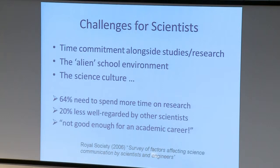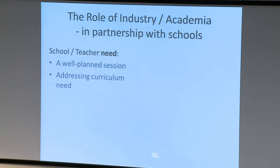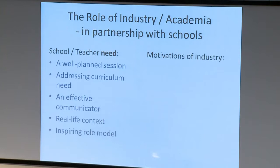Really worrying, 20% felt less well regarded by their peers and by other scientists because they took part in outreach and engagement activities. And one even said that they felt not good enough for an academic career because they did so much outreach. Yes, there is a balance to be struck there, but these are comments that I want to see banned to the history books. So, how can industry or academia best support partnership working with schools? Well, this is what schools or teachers need: a well-planned session addressing curriculum need, an effective communicator in the classroom with them, real-life context for the work they're studying, and inspiring role models.